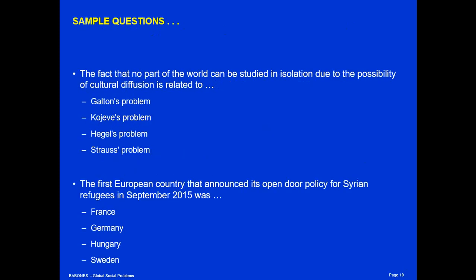The sort of very straightforward questions I would ask on this exam are things straight from the slides. For example: 'The fact that no part of the world can be studied in isolation due to the possibility of cultural diffusion is related to...' — only one of those answer choices has been talked about in our class, and the other three have never been mentioned. Similarly, 'The first European country that announced its open door policy for Syrian refugees in September 2015 was...' — if you've listened to the refugee lectures, which heavily focused on the chancellor of one particular country who invited in Syrian refugees causing a mass flow to Europe, this should be a really obvious answer.